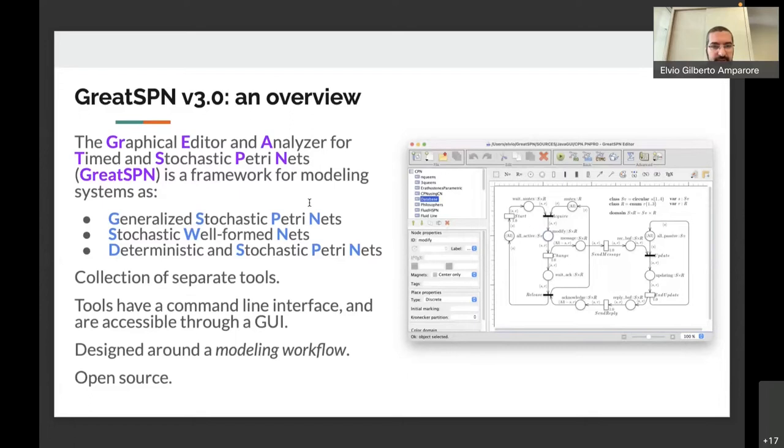It supports three different extensions of the Petri net formalism: the generalized stochastic Petri nets, the stochastic well-formed nets, and the deterministic and stochastic Petri nets. GreatSPN is actually a collection of separate independent tools that perform separate actions.